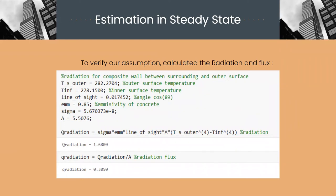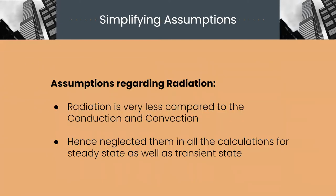However, after calculating conduction and convective heat fluxes, we calculated radiation to verify if our assumption was true or false. And we get that radiation flux is indeed significantly very low. This helps us in taking some assumptions. Being radiation is very less compared to conduction and convection. And hence, we have neglected them in all the calculations for steady state as well as transient state.